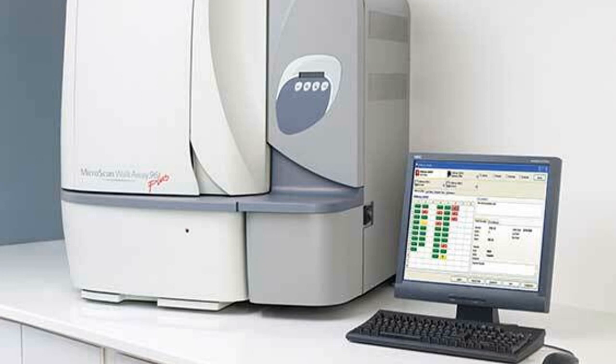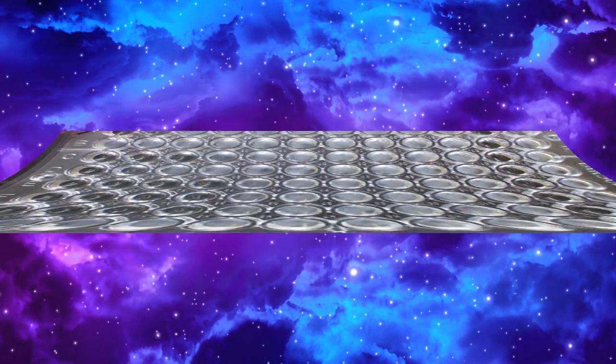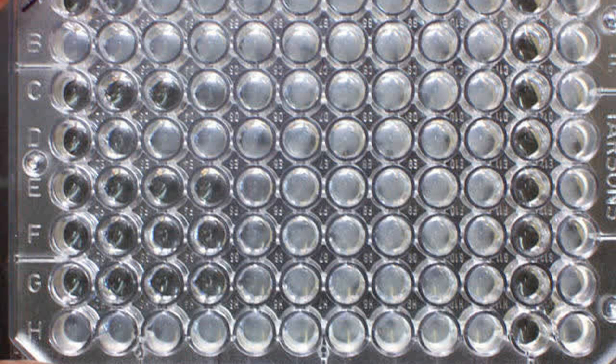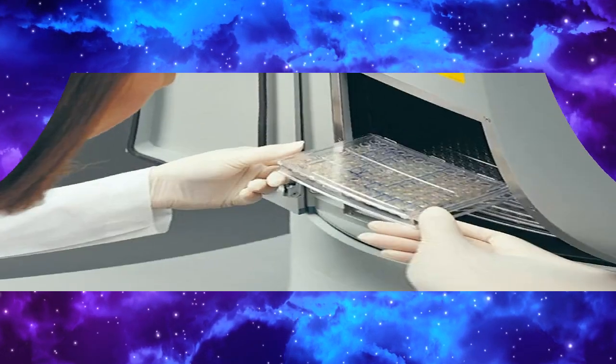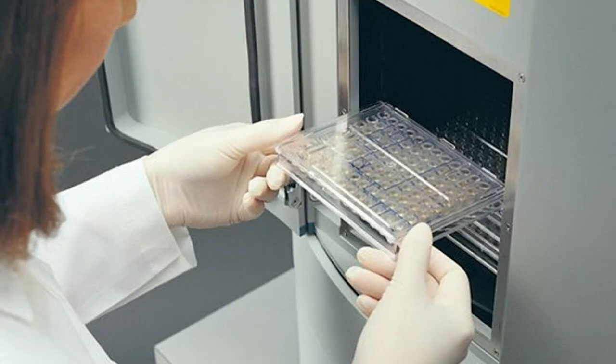Microscan walkaway system also uses the principle of broth micro dilution in a panel format which is manually inoculated with a multi-pronged device. Inoculated panels are then placed in an incubator reader unit where they are incubated for the required time and then the growth patterns are automatically read and interpreted. Depending on the micro dilution tray used, bacterial growth may be detected using spectrophotometry or fluorometry.